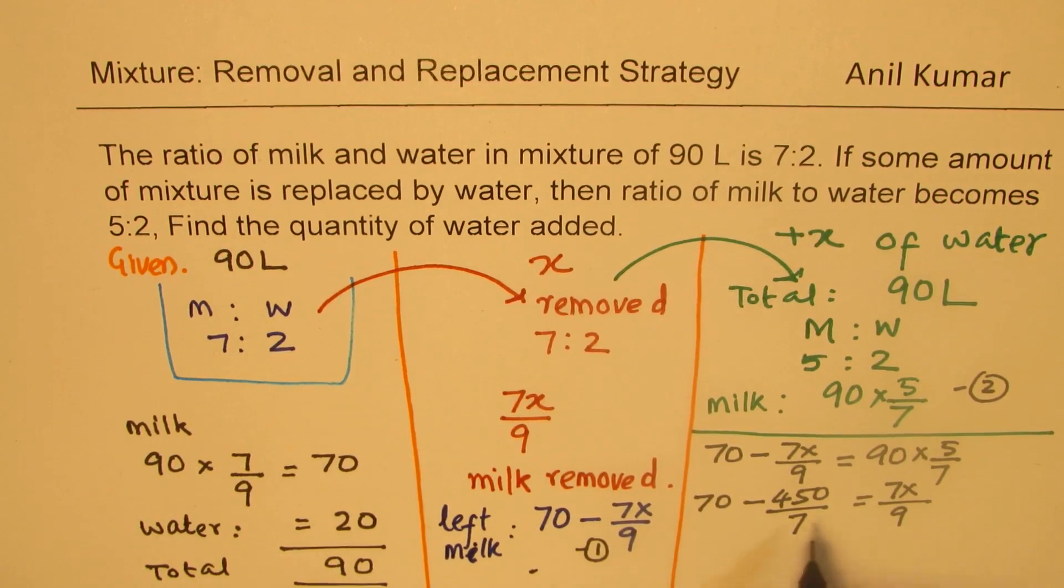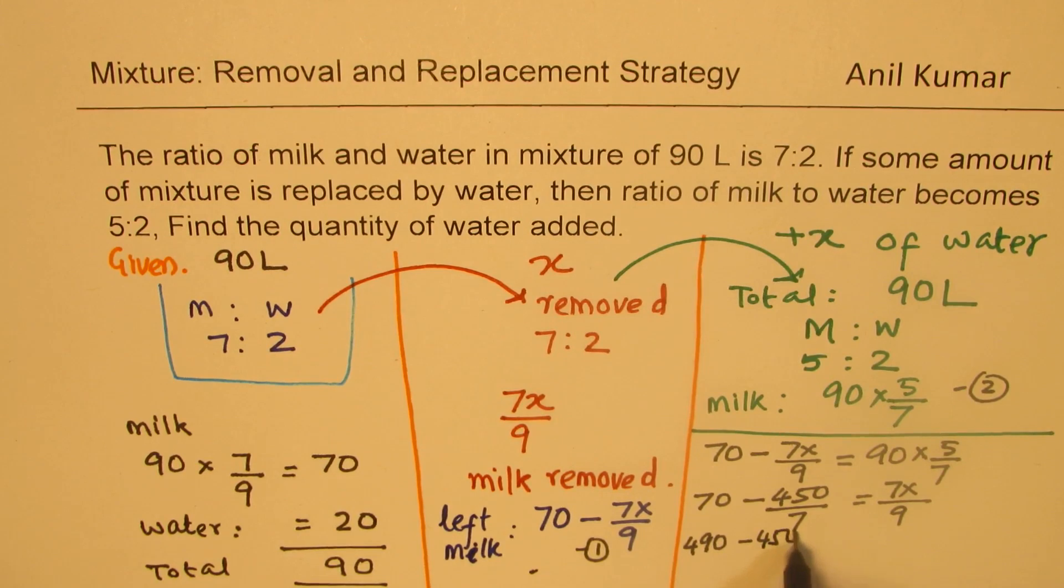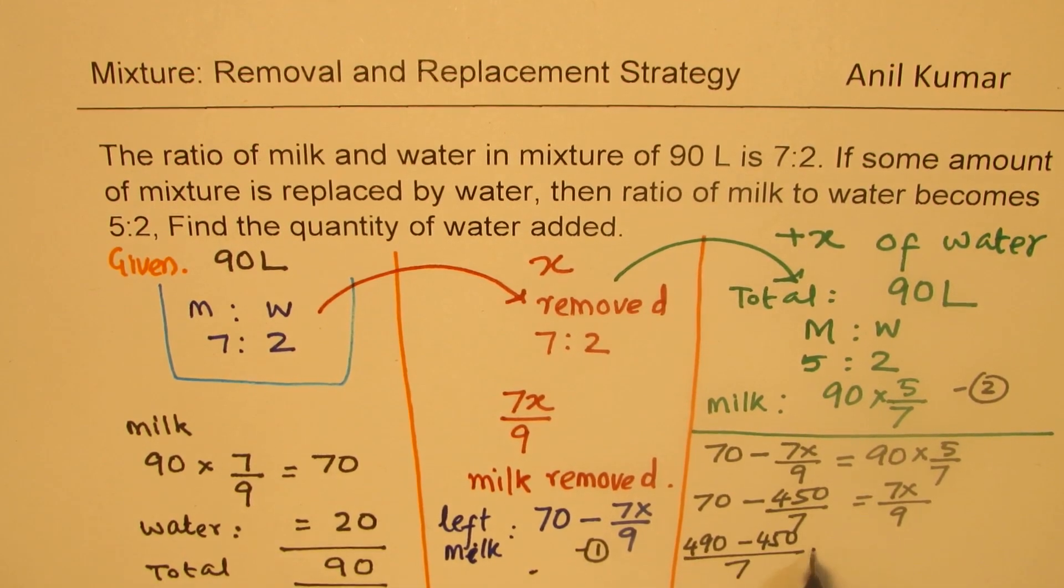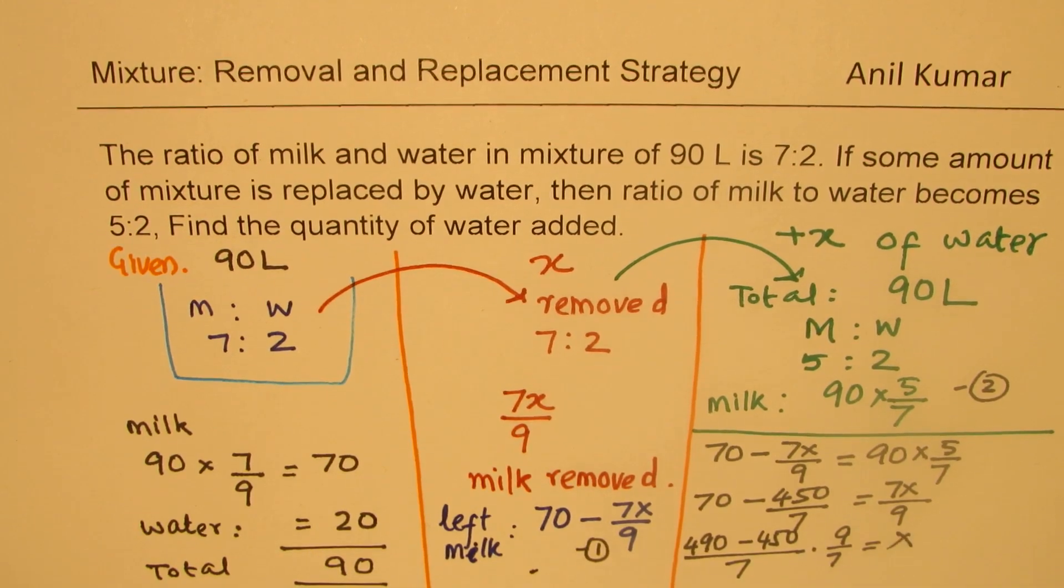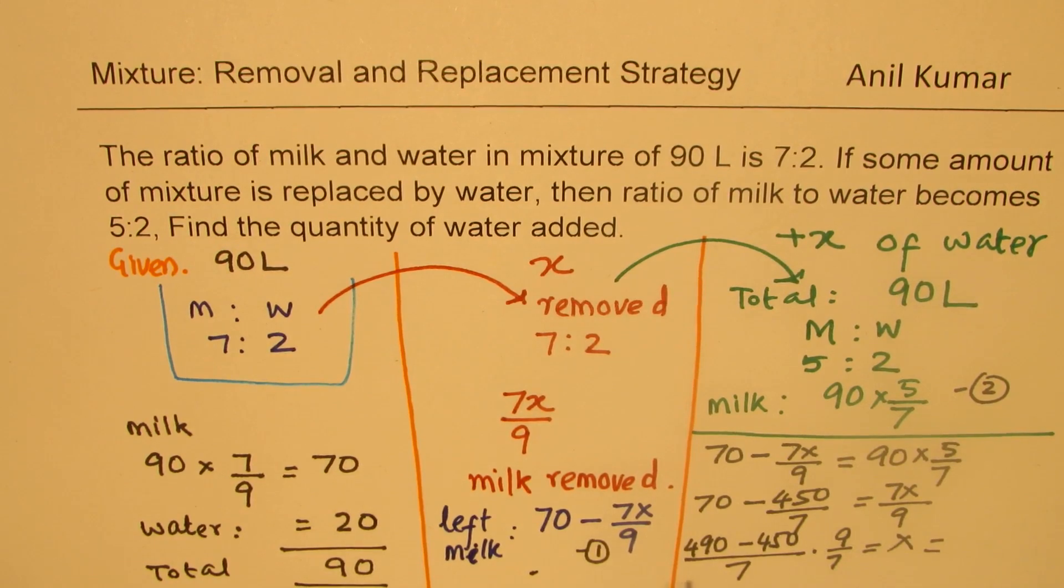So we will multiply this, 7 times 7 is 49, so 490 minus 450 over 7 times, cross multiply, 9 over 7 is the value of x. So that becomes your answer.